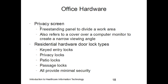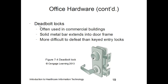Some office hardware that could be used: a privacy screen is a freestanding panel to divide a work area, or a cover over a computer monitor that narrows the viewing angle so people walking by can't see what you're working on. Residential door locks — key entry, privacy lock, patio lock, passage lock — offer minimal security enhancements. A deadbolt lock, commonly used in commercial buildings, has a solid bar that extends into the door frame and offers more security than a standard keyed entry.